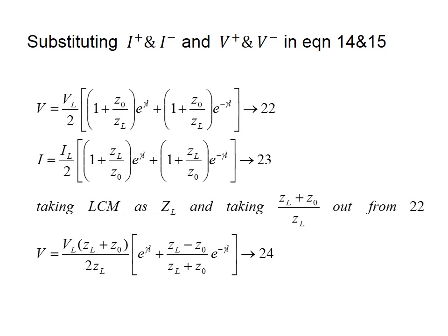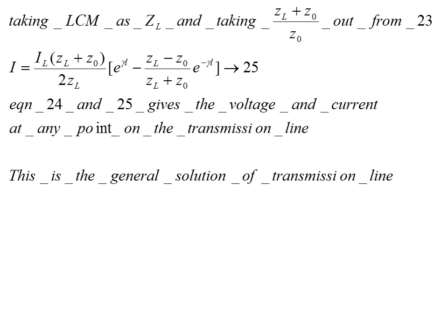Further simplification by taking the LCM gives the voltage expression as equation 24: VL·[(ZL + Z₀)/(2ZL)]·e^(γL) + [(ZL − Z₀)/(ZL + Z₀)]·e^(−γL). Similarly, taking LCM for the current equation from equation 23, factoring out (ZL + Z₀)/Z₀, gives equation 25. Equations 24 and 25 together represent the general solution of a transmission line, giving voltage and current at any point.